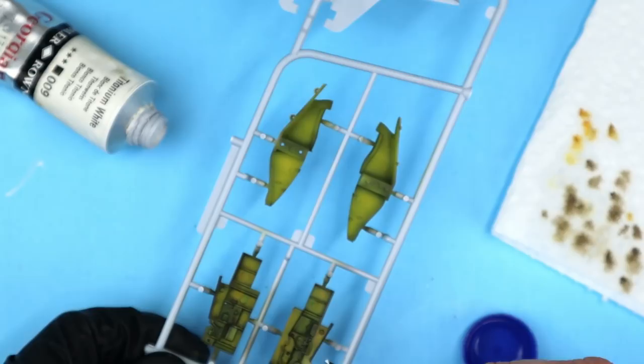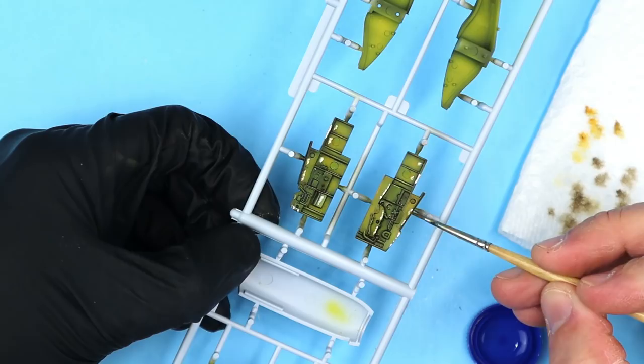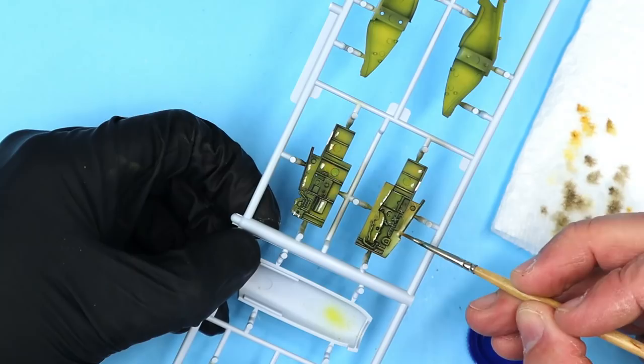You can see how it starts to add a whole new dimension to the finish. Finally I add a few small dots of white to some of the raised areas to accentuate some highlights and wear that would occur in those areas. These are blended and removed in the same way as the other colors.